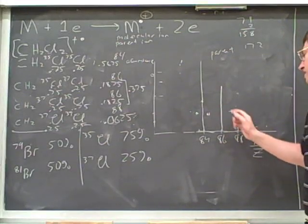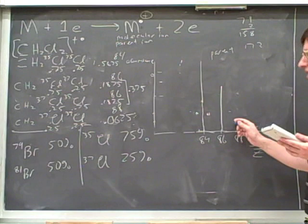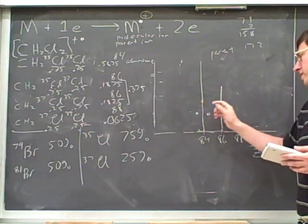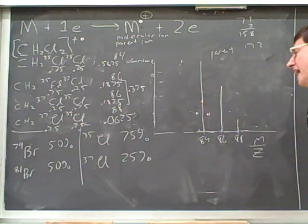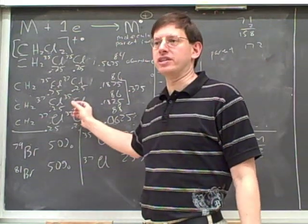So we figured out that the middle peak should be six times higher than the right-hand peak and the left-hand peak should be one and a half times bigger than the middle peak. If you see this type of pattern, that's diagnostic for two chlorines.